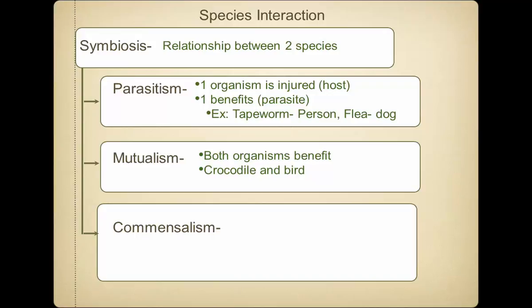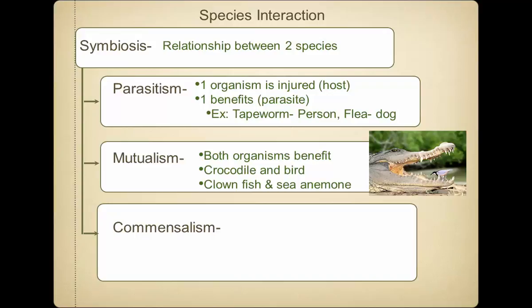The crocodile evolved an adaptation to not kill this specific bird because it benefits them. Similarly, a clownfish and sea anemone have a mutualistic relationship. The sea anemone has stinging nematocysts that would sting most fish, but the clownfish is not affected, so it can live inside. The clownfish gets protection because predators won't hunt it in the anemone — they'll get stung. The anemone gets a little bit of food the clownfish brings in.